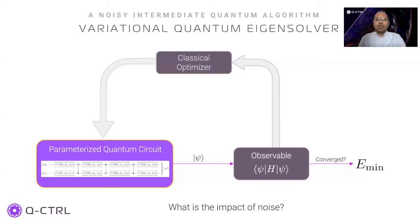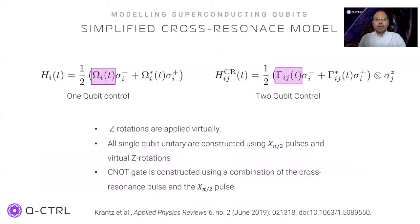When the cost function is the expectation value of an observable, the variational theorem guarantees that this optimal value is an upper bound on the minimum possible value of the observable. Tighter bounds can be obtained by carefully choosing the ansatz. To analyze the impact of noise on quantum algorithms, let us first consider how external noise sources interact with a quantum device at the pulse control level.